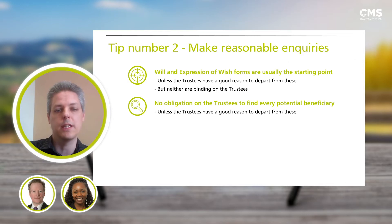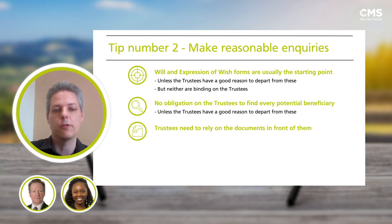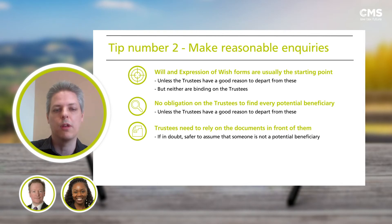Where there is uncertainty, trustees will need to take a view and rely on the documents in front of them. After all, it's more difficult to challenge a decision where a reasonable approach has been taken. If there is some doubt as to whether someone falls within the named class, the safe approach is always to err on the side of caution and assume they don't, because to pay someone who's not within the class of beneficiaries would be a breach of trust, as already mentioned.